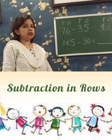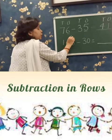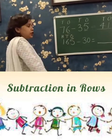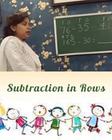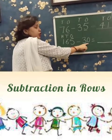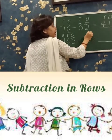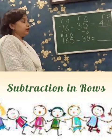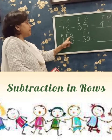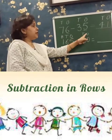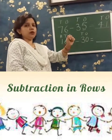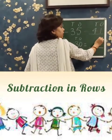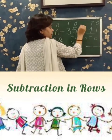165 is a 3-digit number, so we write here 3 places: O, T, H. 30 is a 2-digit number, so we write here 2 places: O, T. The 1's of 165 is 5, and the 1's of 30 is 0. Also write O, T, H in the answer's place.